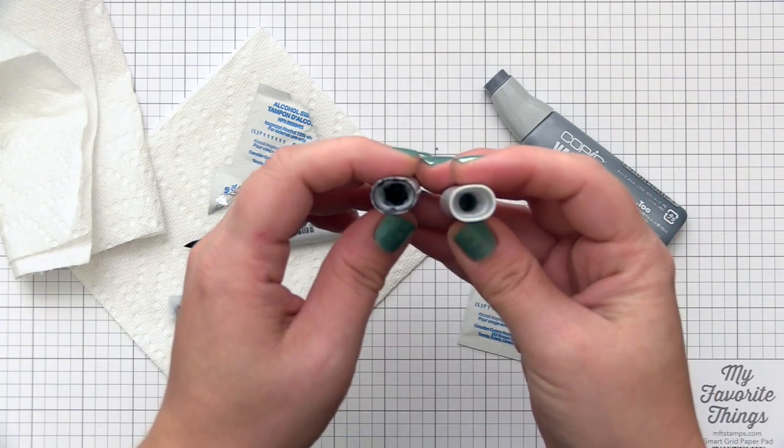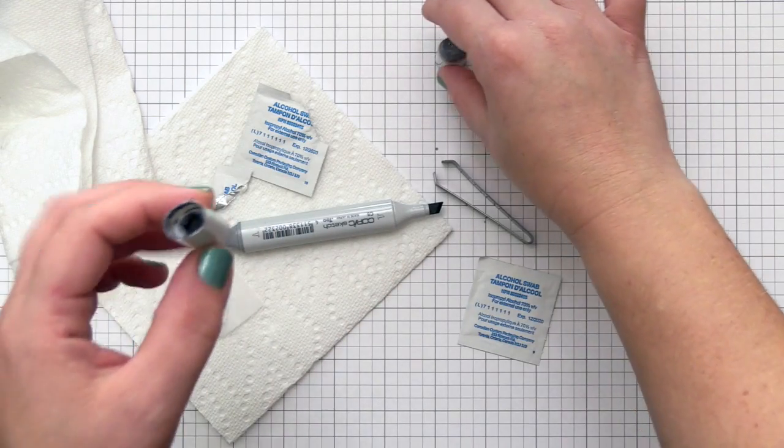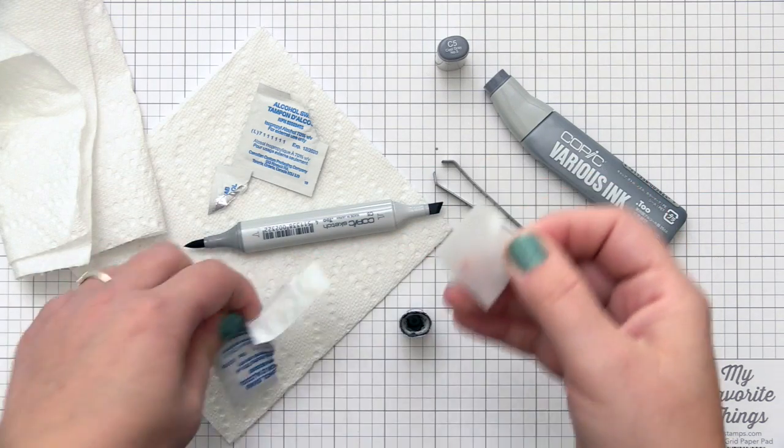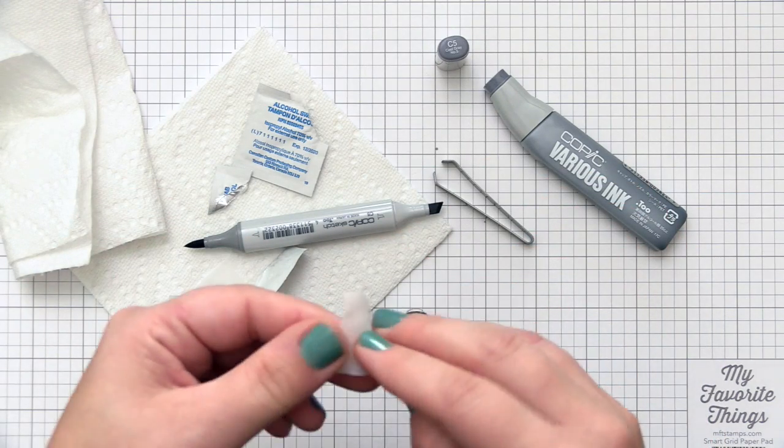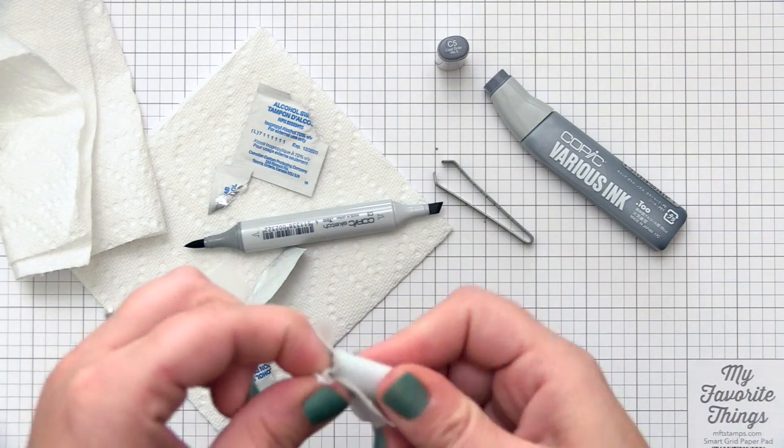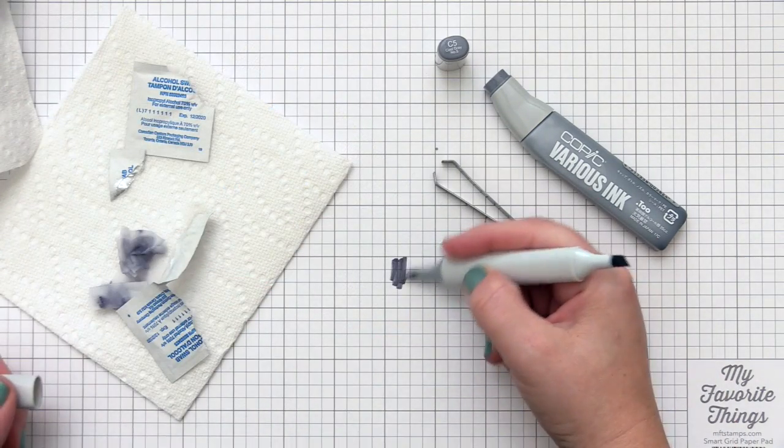Once I've completed that, I also like to run the alcohol swab around the inside of the lid. You can see the chisel end is barely used and the brush end is used a lot because there's much more ink in that cap than the other one. I take the same alcohol wipe and wipe that along there.